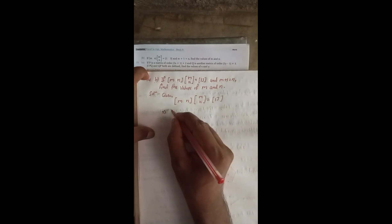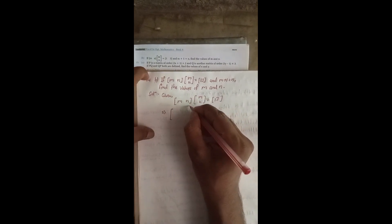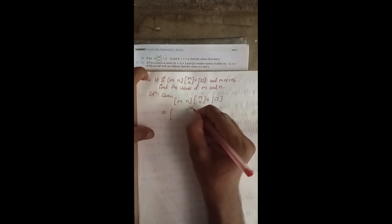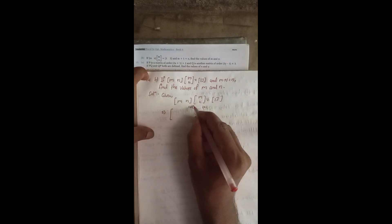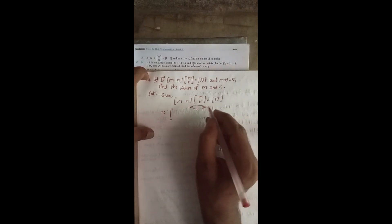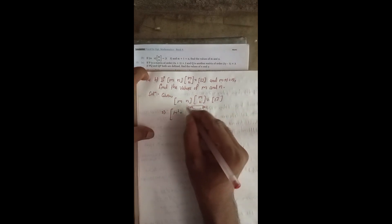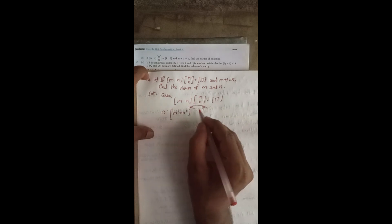Now while solving this, when I multiply, this is a matrix of one row and two columns — that is 1×2 — and this is a matrix of two rows and one column — that is 2×1. So the result will be a 1×1 matrix. That means we will get only one element: M×M plus N×N, which is M² plus N².